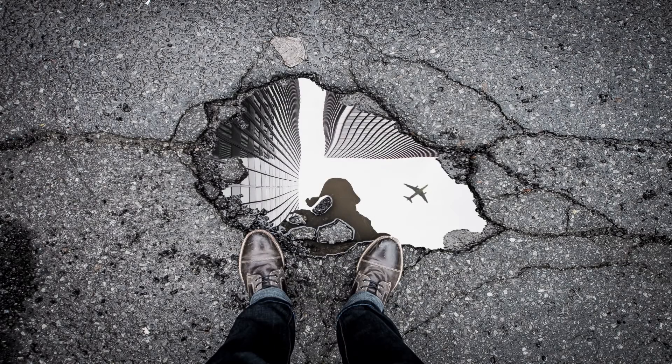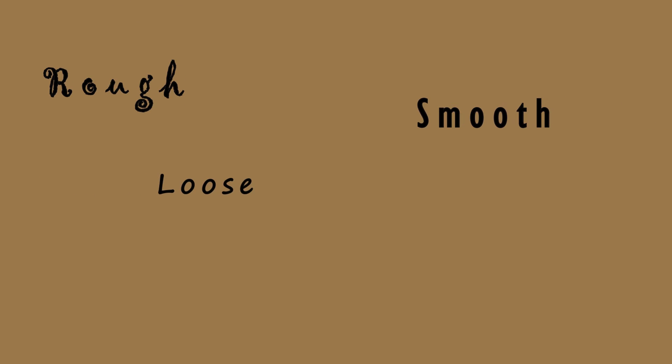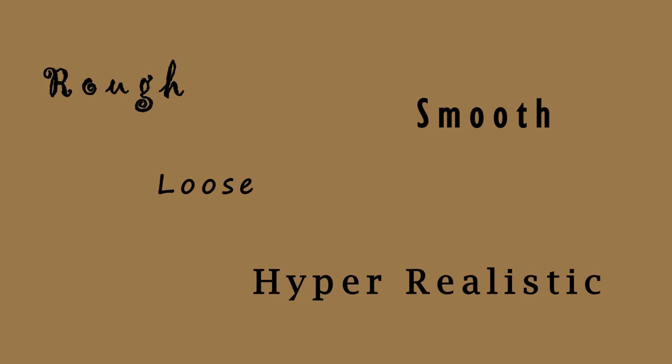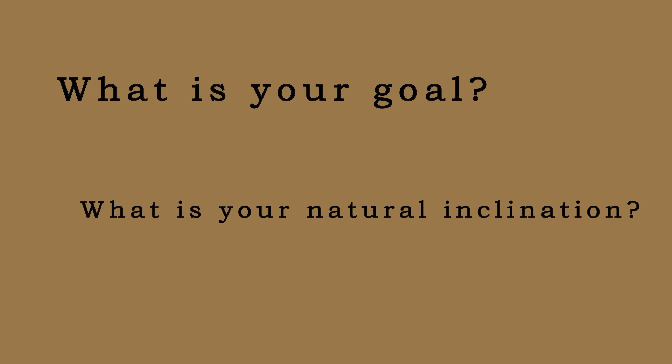Any of these solutions may work, but it is up to you as the artist to decide which is appropriate for your vision and which communicates that most effectively. You might ask yourself: am I a rough, loose, smooth, or hyper-realistic painter? What is your goal as an artist? What is your natural inclination toward mark making? No artist approaches mark making the same — the brushstroke is like a fingerprint; it reflects the individual artist who made it. This can be developed, though — you can experiment to create a more developed visual presence within your work.